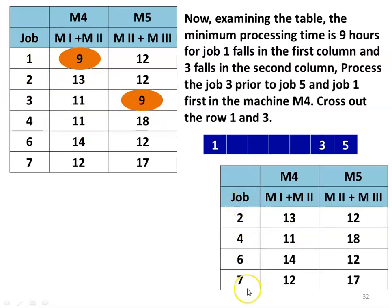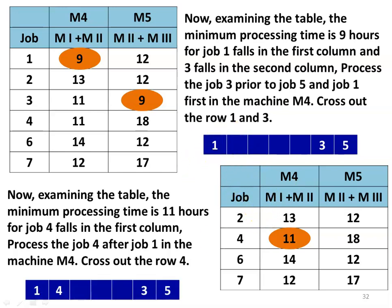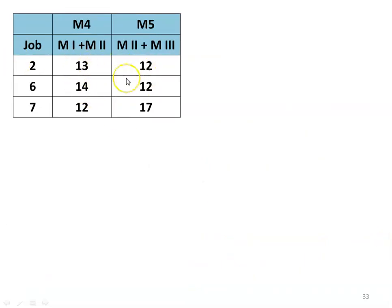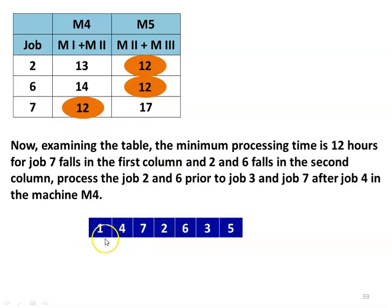Remaining 4 jobs. Minimum time is 11 hours for job 4, falling on the first column — job 4 is processed after job 1. Delete row 4. Remaining 3 jobs: minimum time is 12 for all three. Jobs 2 and 6 fall on the second column; job 7 falls on the first column. So job 7 is processed after job 4. Jobs 2 and 6 are placed before jobs 3 and 5. The optimal sequence is: 1, 4, 7, 2, 6, 3, 5.